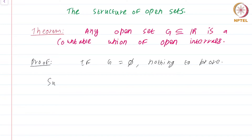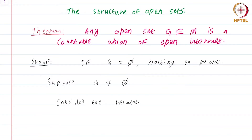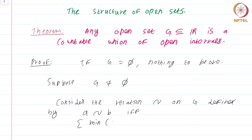Suppose G is non-empty. We have to show that G is a union of open intervals and there are only countably many such open intervals. Consider the relation tilde on G, defined by: A is related to B if and only if the closed interval [min(A,B), max(A,B)] is a subset of G.